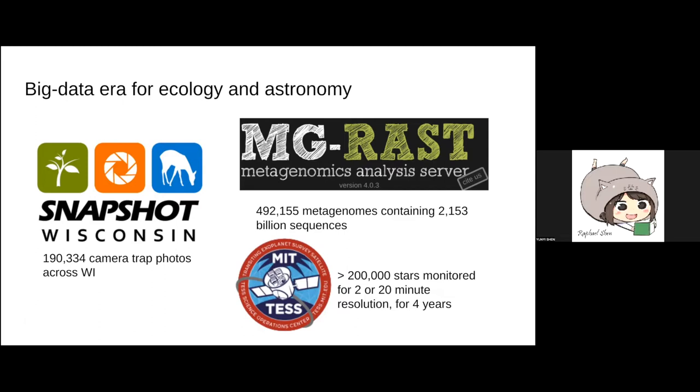to capture what animals they have. As a matter of number, we have like a million camera trap photos, 10 to the 6th camera trap photos. The second data server I worked with is called MGRAST, a server for metagenomics. People do analysis there and upload their raw sequencing data of metagenomics. It has 2,000 billion sequences in that server.